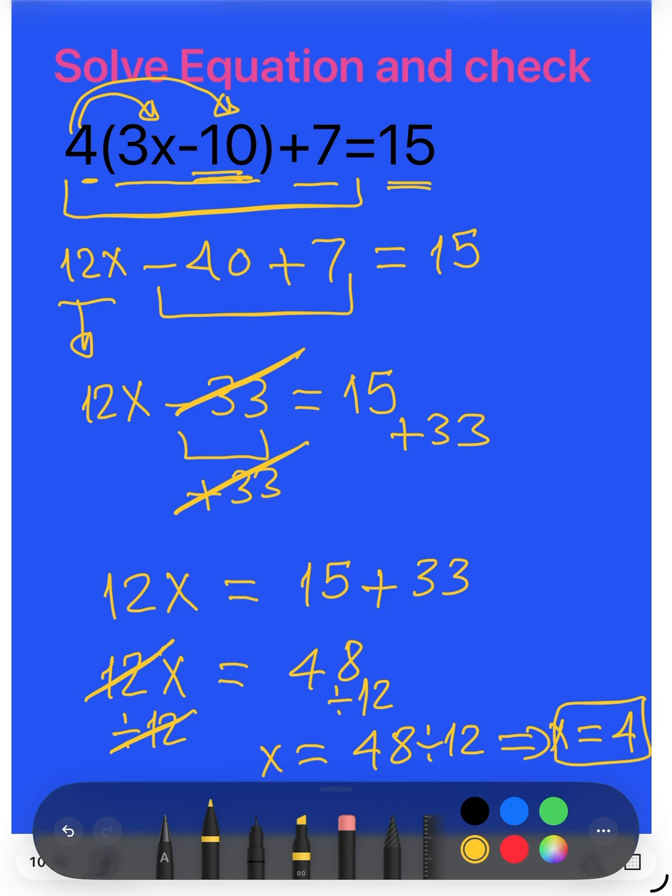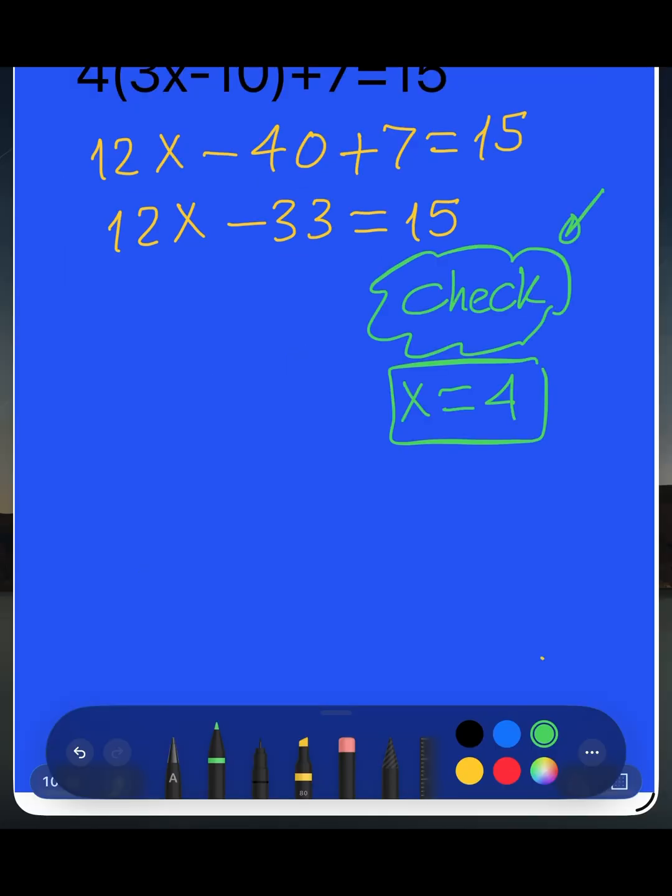Now we will check. Let's check. I replace the x by its value. Here we have 12x minus 33 equals 15. I replace the x by 4. I check.